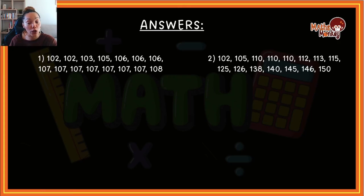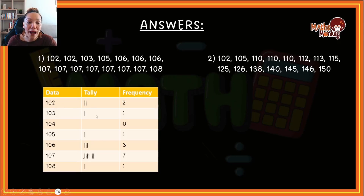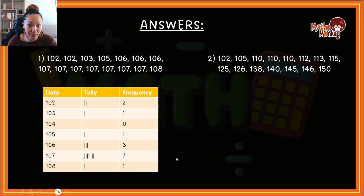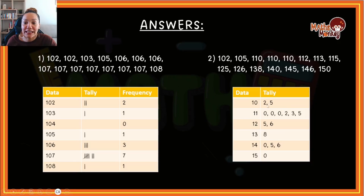Hopefully you feel confident about your answers. For the frequency table: two 102s, one 103, zero 104s, one 105, three 106s, seven 107s — please remember to group the five using the bundle stroke — and one 108. For the stem and leaf plot, the stems are 10, 11, 12, 13, 14, and 15, and the leaves are: 2 and 5; triple zero; 2, 3, 5, 5, 6; then 8; then 0, 5, 6; and 0 — which represents the values up to 150.